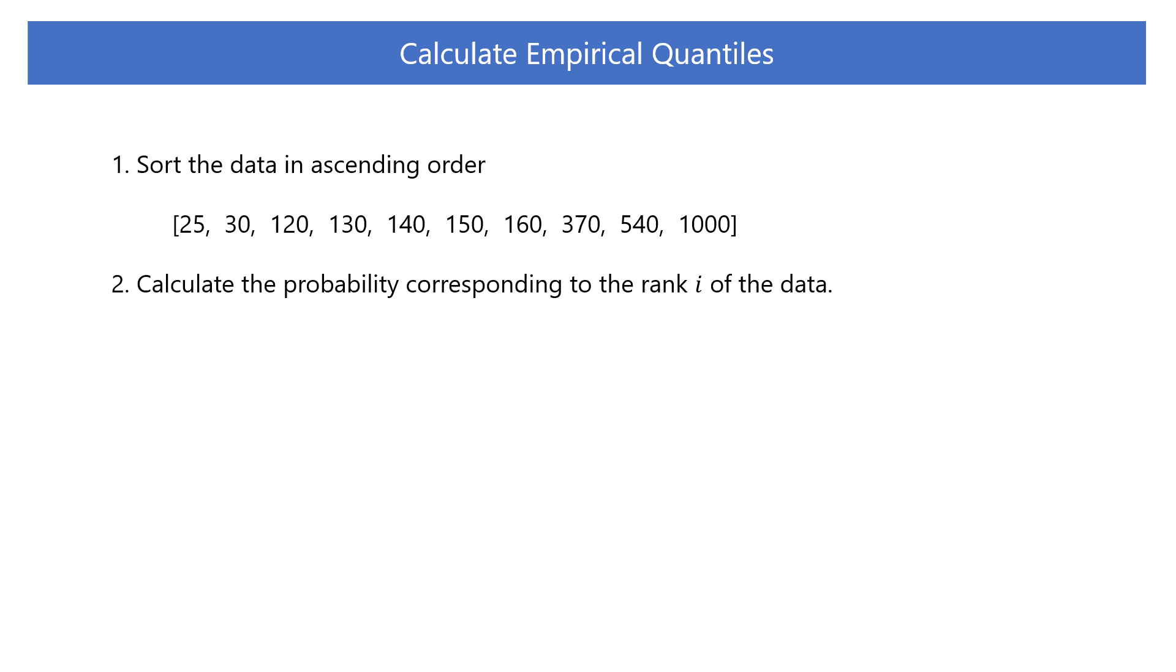In a Q-Q plot, the position of each data point relative to the whole is expressed as a probability to identify the quantile point of the data. For example, given 10 data points, the smallest data point corresponds to a probability of 0.05, and the second corresponds to a probability of 0.15. This is calculated by this formula.